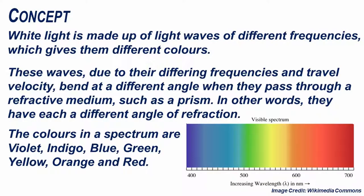White light is made up of light waves of different frequencies which gives them different colors. These waves, due to their differing frequencies and travel velocity, bend at a different angle when they pass through a refractive medium such as a prism.